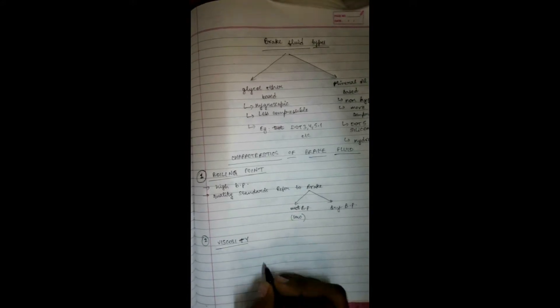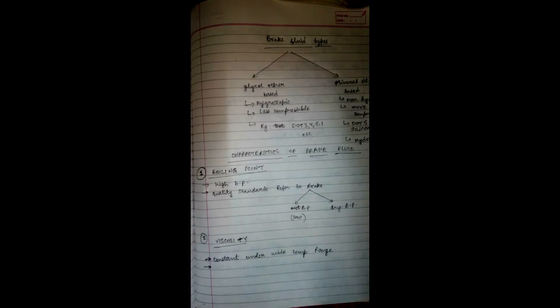The next property is viscosity. Your brake fluid should maintain a constant viscosity under a wide temperature range. Viscosity is essentially a frictional force, so if your viscosity is not constant throughout all the components, there may be gaps, compression, or irregularity in your brake fluid flow. So viscosity must remain constant throughout the temperature range of your vehicle.